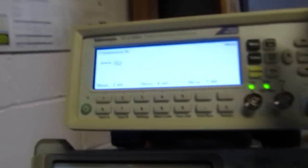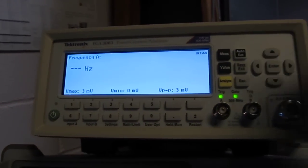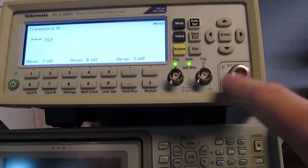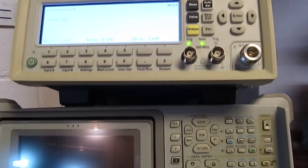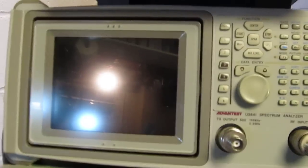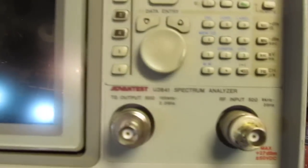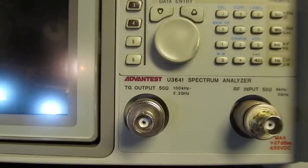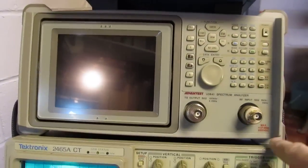Over here this is a Tektronix FCA 3003 frequency counter. It's got a pre-scaled input up to three gigahertz and then two inputs that will go up to 300 meg. This analyzer here is an Advantest U3641 spectrum analyzer with a tracking generator up to three gigahertz. Really handy for tuning filters and things like that.